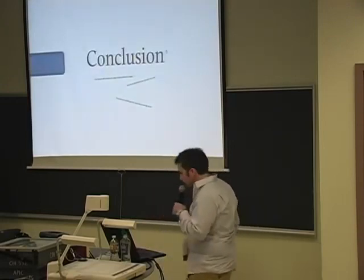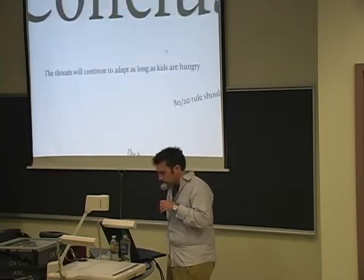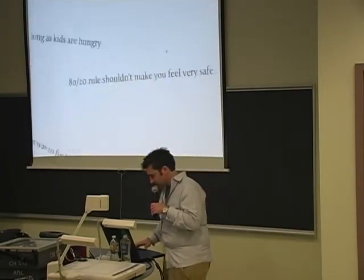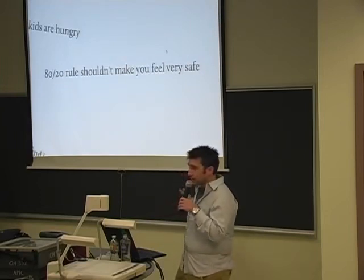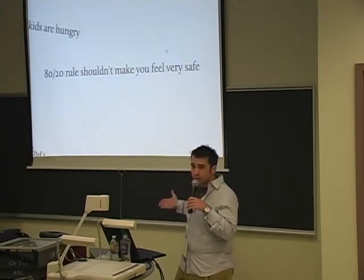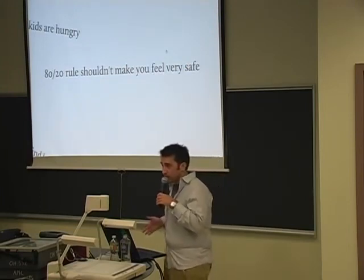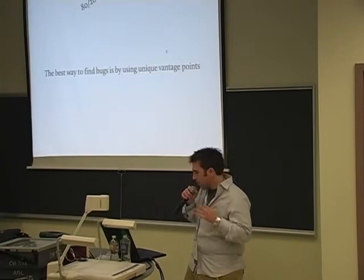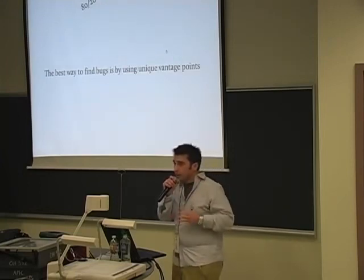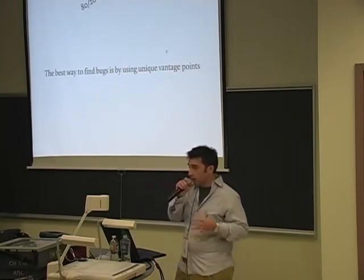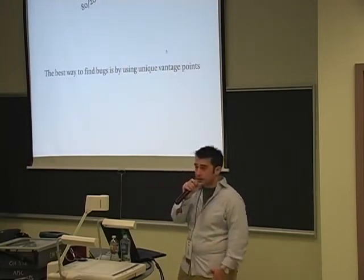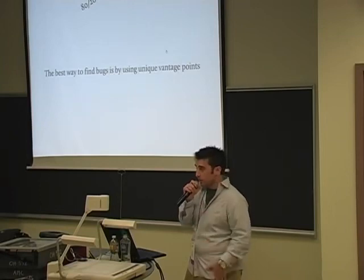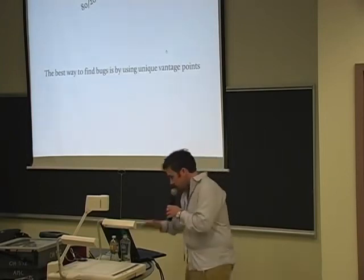In conclusion, here are the things I hope you remember: threats will continue to adapt as long as kids are hungry, and kids are really hungry. When someone says they've closed the 20% most important vulnerabilities, that should not make anybody feel safe — in fact it should make you feel a little more scared. The best way to find bugs inside code that's been heavily audited is to look at it from a unique vantage point, not the same perspective as everybody else. If you're reviewing the same piece of code, try to have a fresh take rather than using the same methods you've always used.